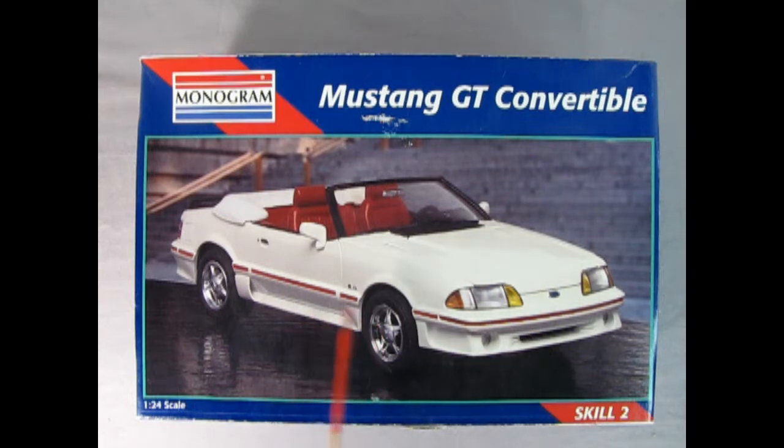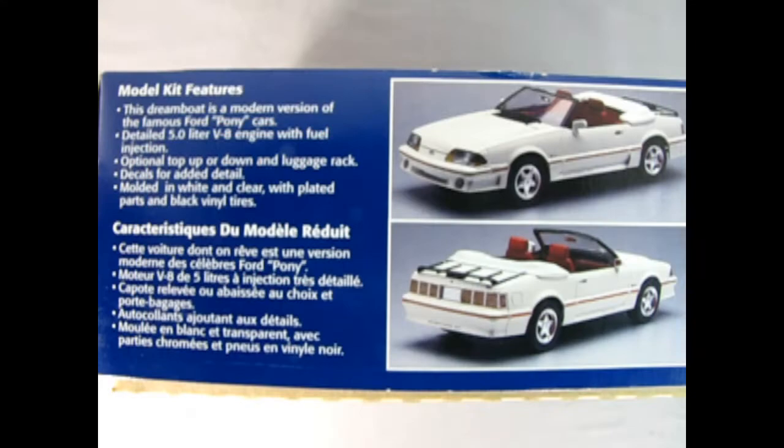Look at how wonderful this is. White body, red interior, red pin striping, and excellent Mustang mag wheels. This side of the box tells us all about the model kit features. It says this dream boat is a modern version of the famous Ford pony cars. Features include a detailed 5.0 liter V8 engine with fuel injection, optional top up or down and luggage rack, decals for added detail, molded in white and clear with plated parts and black vinyl tires.